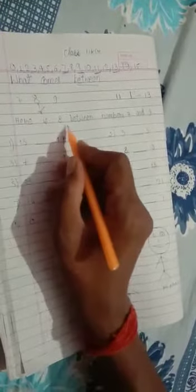Okay, 7 and 9. Here is 8, between number 7 and 9. 7 and 9 ka beech ka number kaun sa hai? 8. Here is 8, between number 7 and 9.